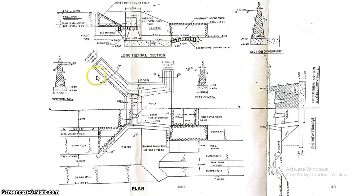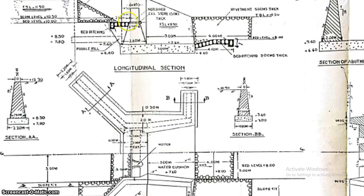This figure is the longitudinal section. We will discuss the details in this section. In this section you will see the details. This is the drop wall: 1 meter. The top width is 2.6 meters and the bottom width is 1.85 meters. The top width shown here is 6 meters.